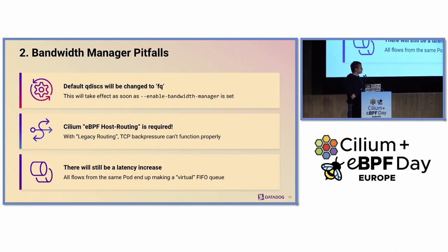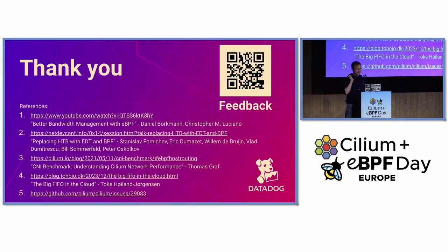To sum up, the three lessons we learned: first, your default queue disks will be changed to FQ by Cilium as soon as you enable the bandwidth manager, even if you don't use this feature. Second, you need to make sure BPF host routing is enabled if you want to use this feature efficiently. Finally, there will still be a latency increase due to the way the EDT algorithm works. This talk is also a call for ideas if you have any suggestions on how to improve this. I highly recommend reading blog post number four, which explains this problem in much more detail.